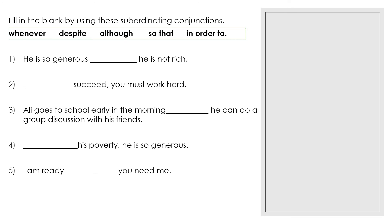For the exercise, fill in the blank using the given subordinating conjunctions: despite, although, so that, in order to. Number one: 'He is so generous' and 'he is not rich.' The best answer is 'although' or 'even though' — because these are two contrasting ideas: generous but not rich. Number two: 'Succeed, you must work hard.' The best answer is 'in order to' — 'In order to succeed, you must work hard' — meaning 'if you want to succeed.'